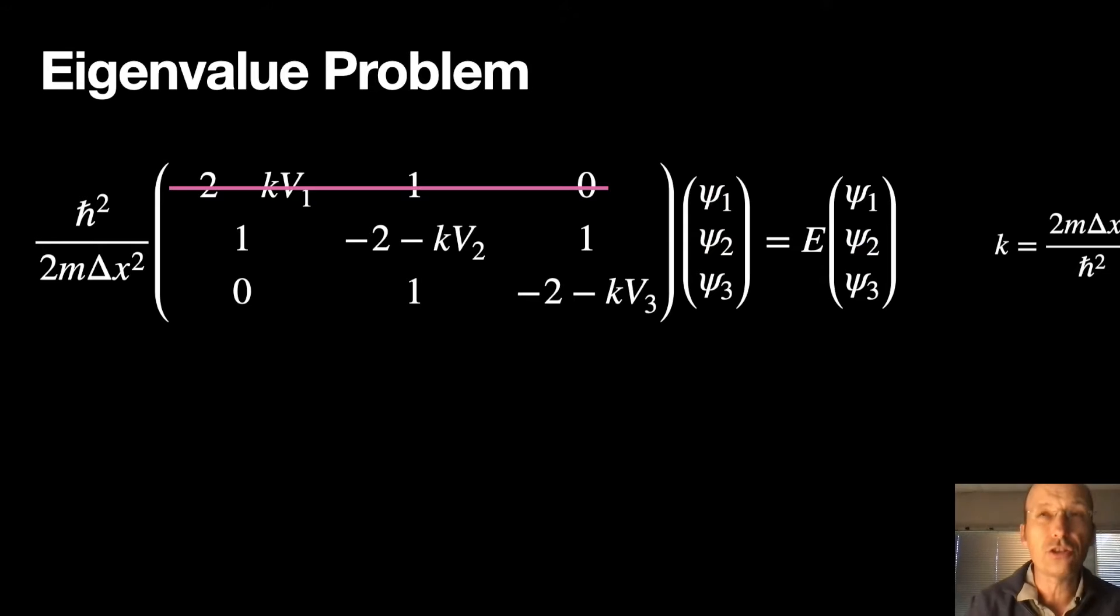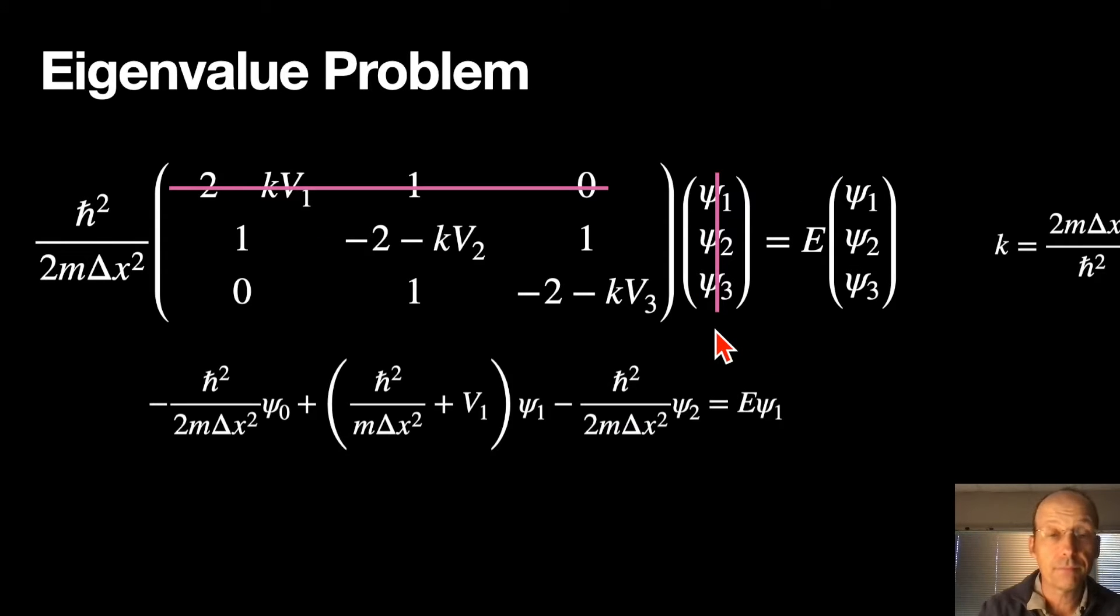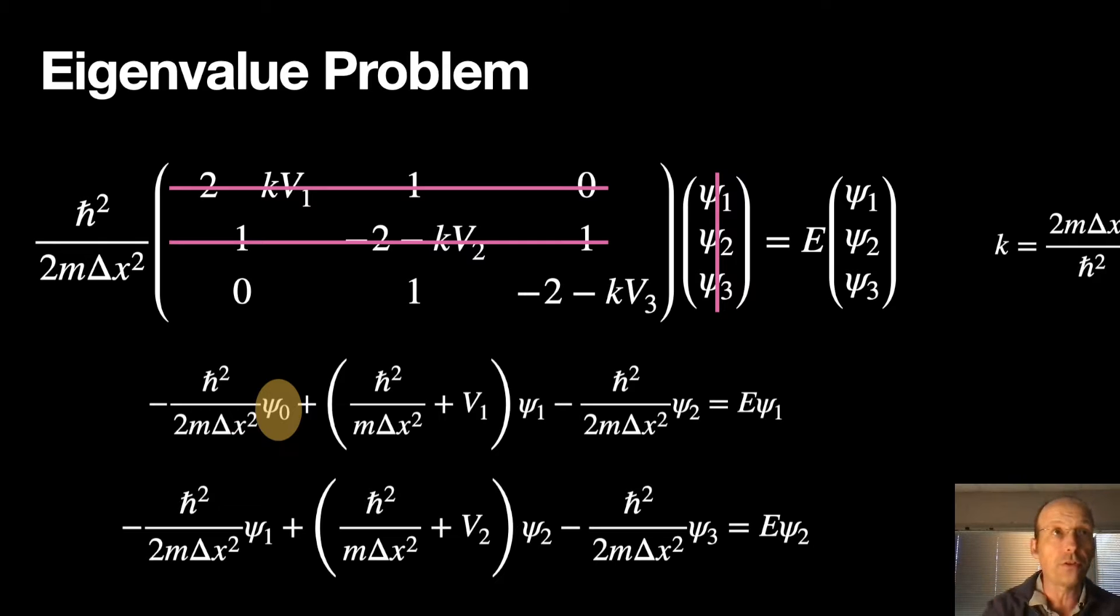And I can write my wave function psi as a vector. So now I get a matrix times a vector is equal to a scalar times a vector. And that's the eigenvalue problem. But let's just see how this works to show you that it is indeed the same thing. If I multiply this matrix out, I get that multiplied by that. It gives me that.